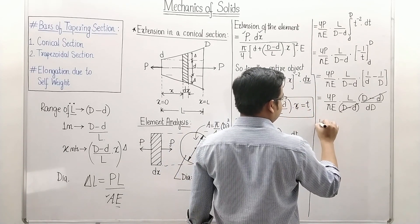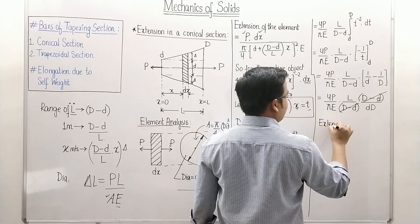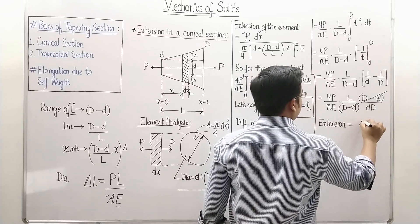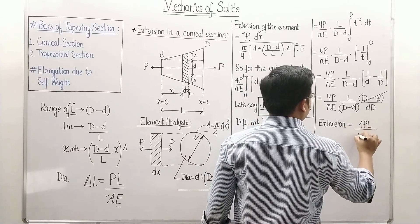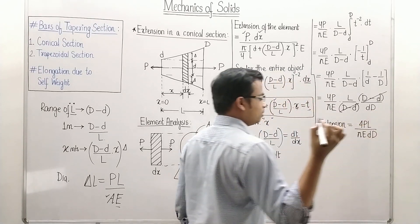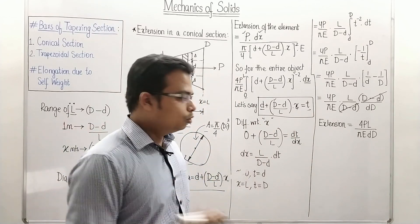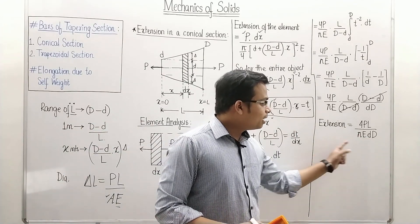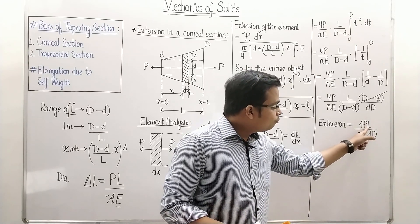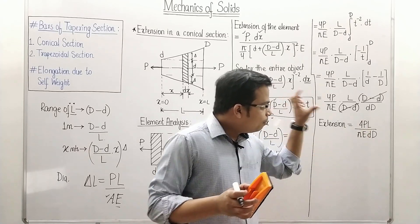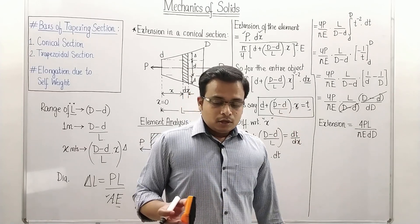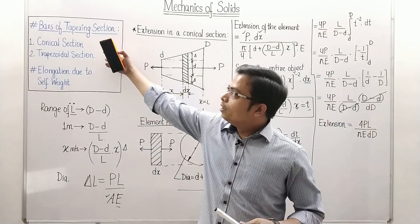The final expression for extension in a conical (frustum) section under axial load P is: δl = 4PL / (π E d D). Knowing the small diameter d, large diameter D, Young's modulus E, force P, and length L, you can directly calculate the net extension.